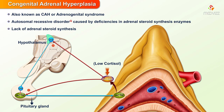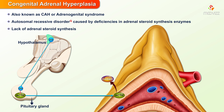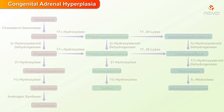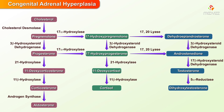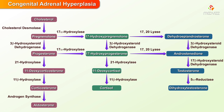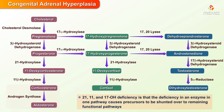Low cortisol causes an increase in adrenocorticotropic hormone release, which stimulates and causes hyperplasia of the adrenal glands. The three main enzymatic deficiencies are 21-hydroxylase, 11-hydroxylase, and 17-hydroxylase. A unifying feature is that deficiency in one pathway causes precursors to be shunted over to remaining functional pathways.